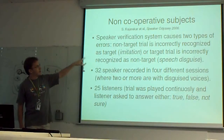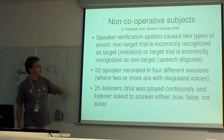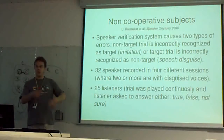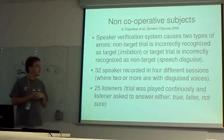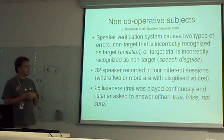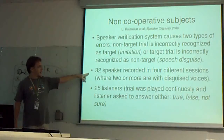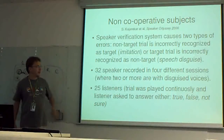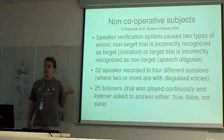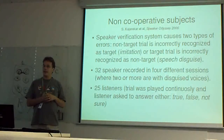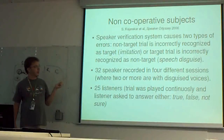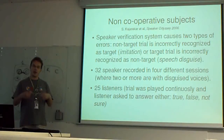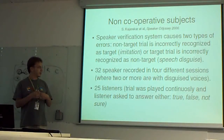That causes type one errors. Type two errors occur when you are a target trial and you are trying not to be recognized. There were 32 speakers recorded in four different sessions, and there were multiple voice disguise cases. In this case study, they studied only voice disguise — which means trying not to be recognized.